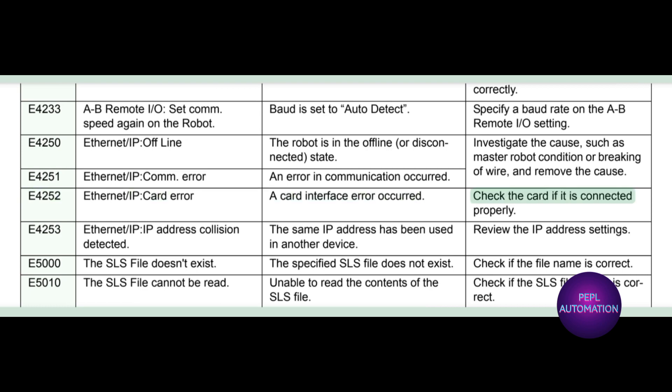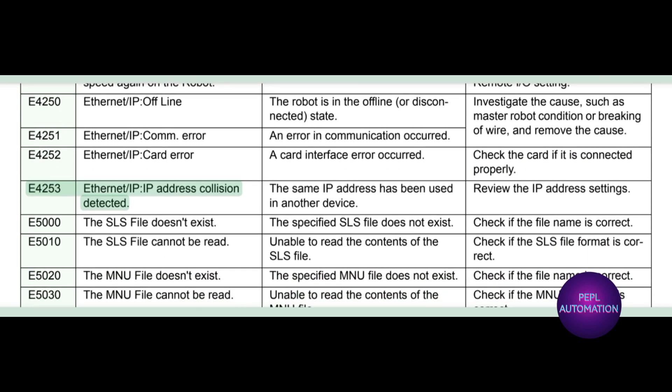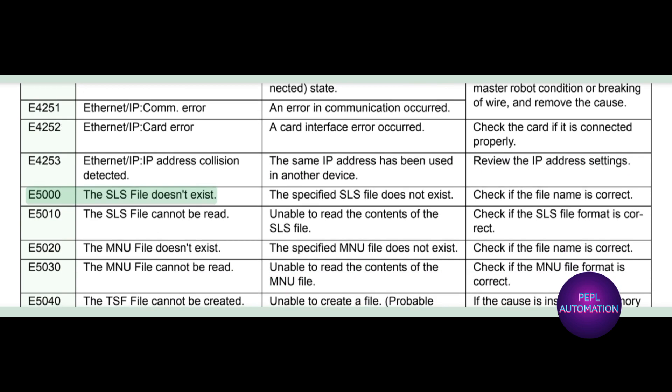E4251 Ethernet IP com error: an error in communication occurred. E4252 Ethernet IP card error: a card interface error occurred. Check the card if it is connected properly. E4253 Ethernet IP IP address collision detected: the same IP address has been used in another device. Review the IP address settings.